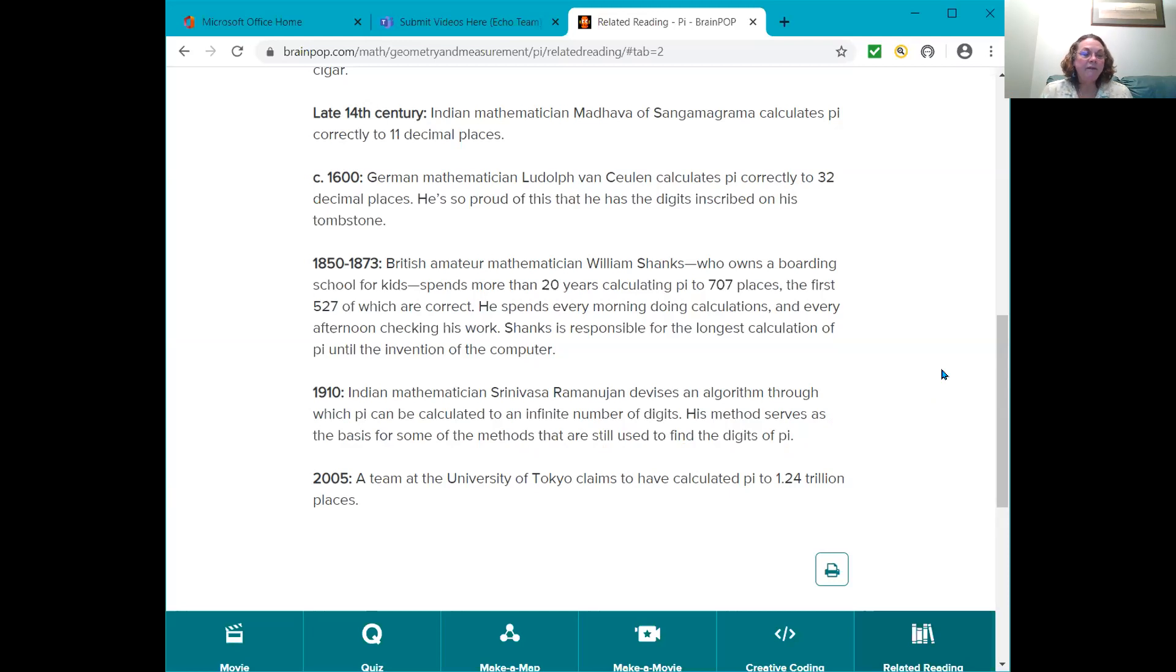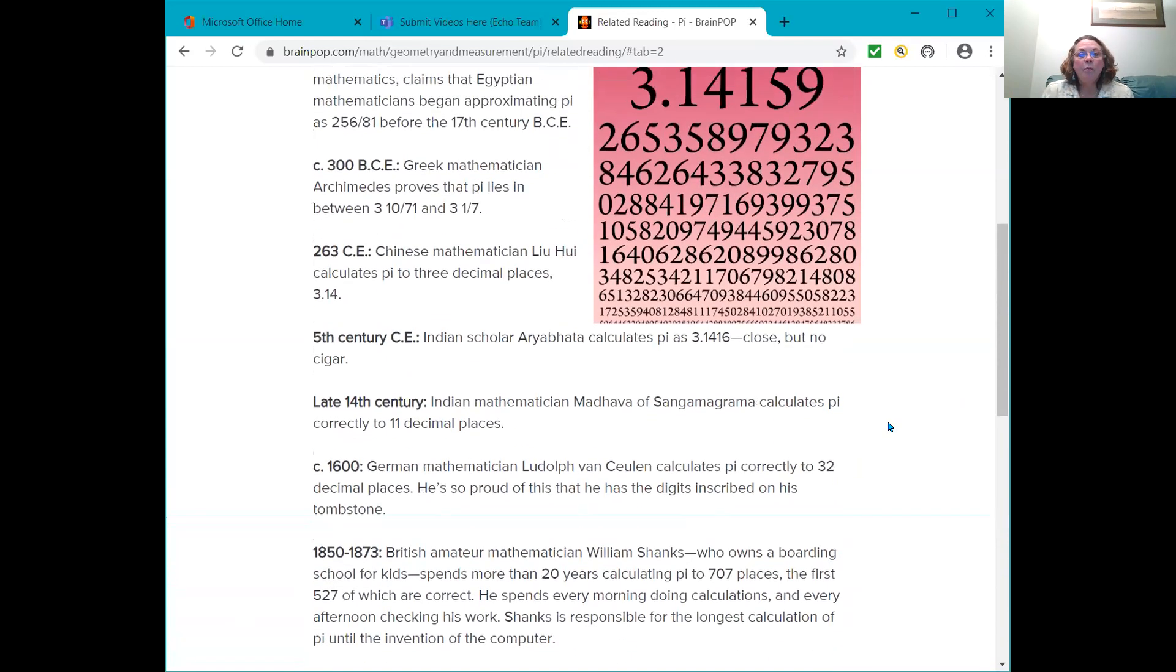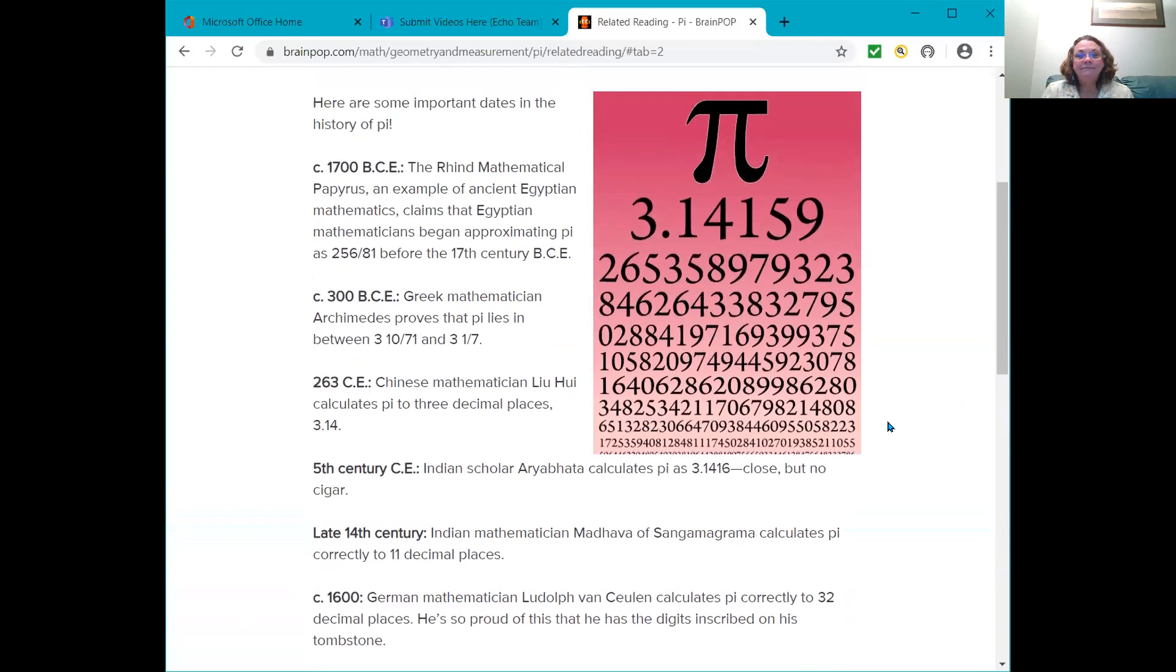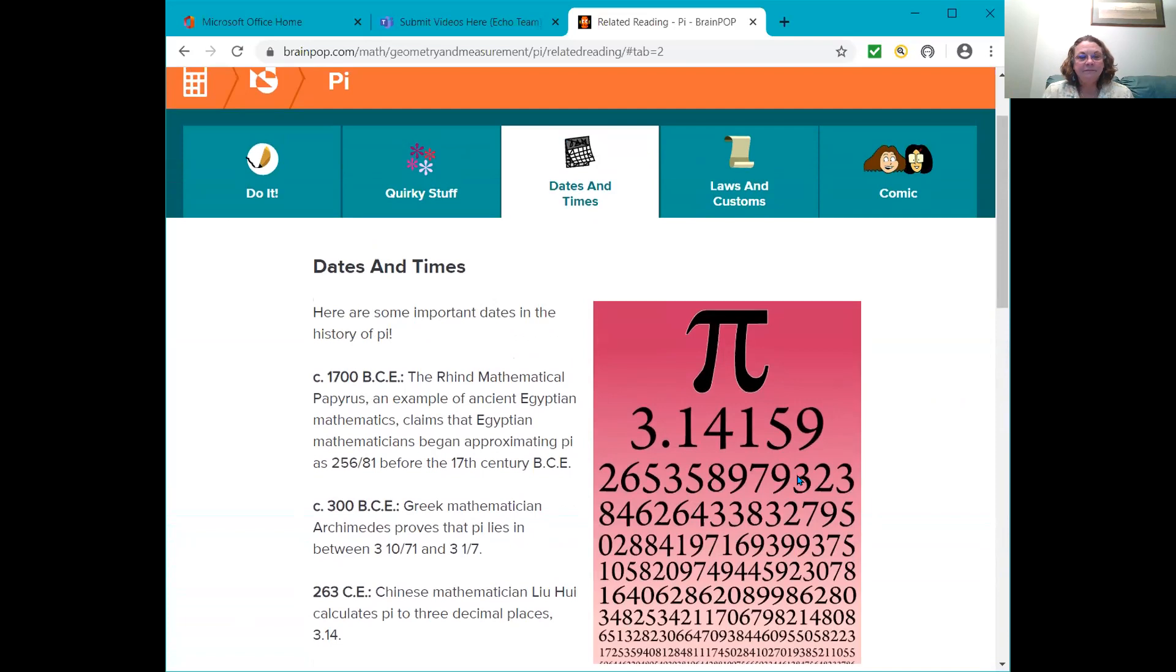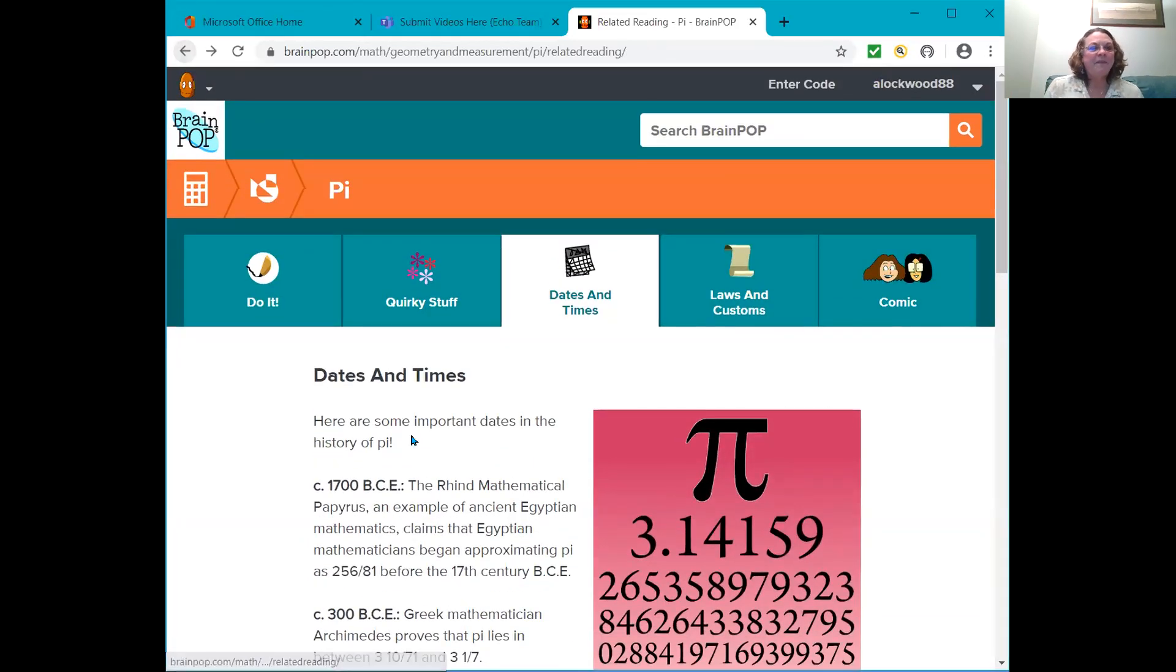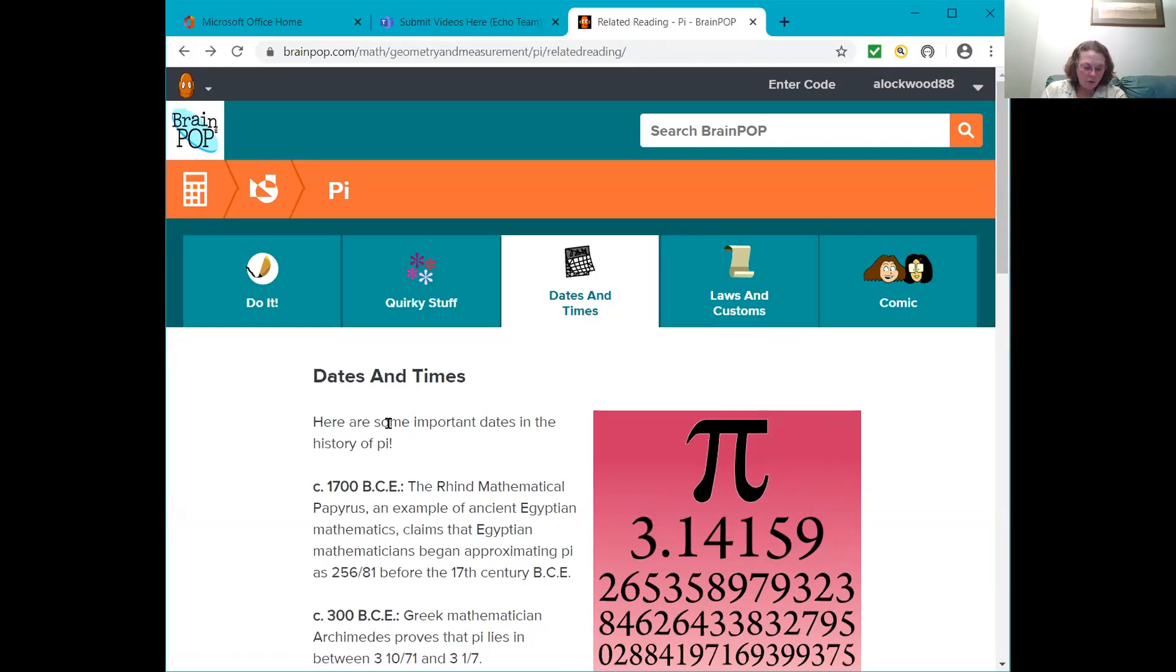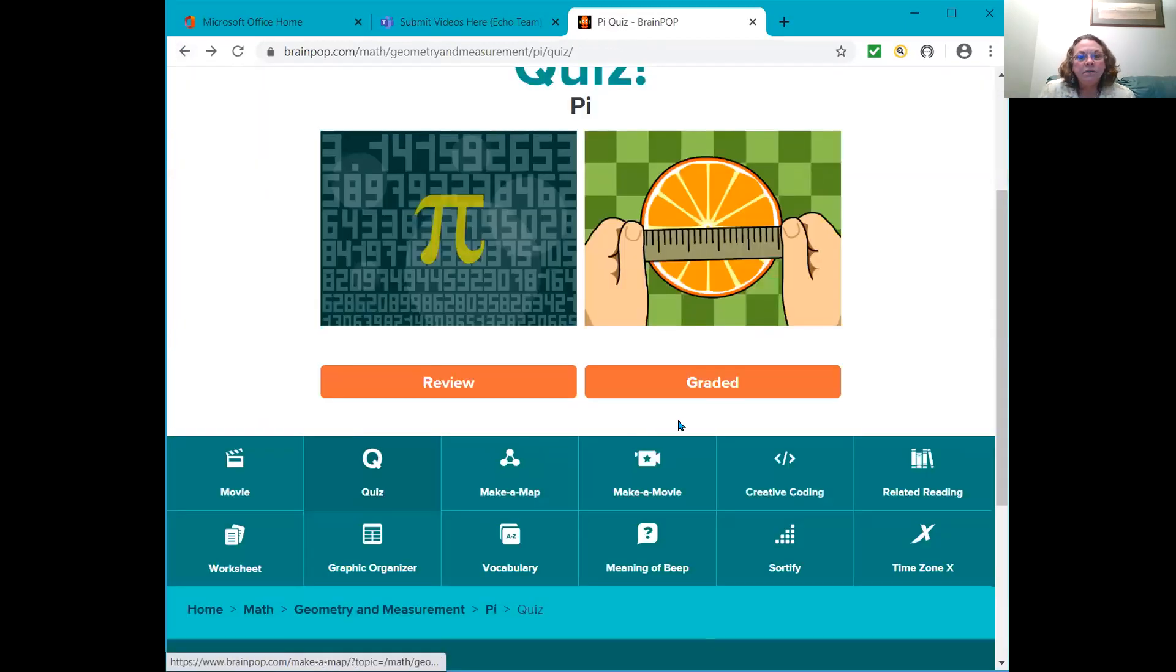Then in 2005, a team at the University of Tokyo claims to have calculated Pi to 1.24 trillion places. Oh my goodness. Oh my goodness. Pretty impressive. Kind of crazy. Okay, so now we know what Pi is. We're going to do a worksheet.